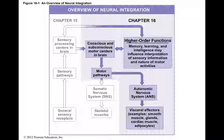Those effectors include smooth muscles — found in blood vessels and intestines — the cardiac muscle of the heart, glands like salivary glands and mucous glands, and adipocytes. The autonomic nervous system has only motor neurons going out to those structures.